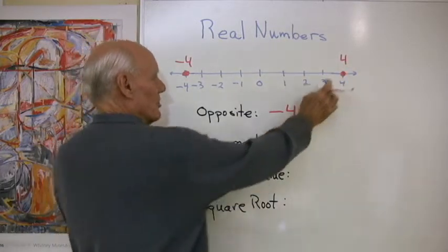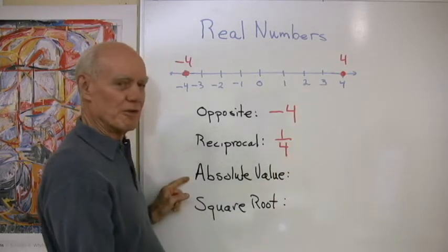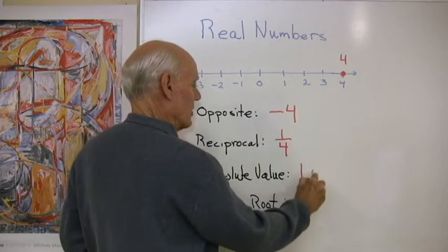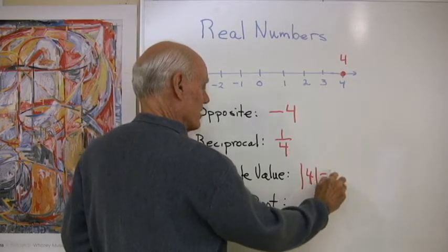Reciprocal, so the reciprocal of four is one-fourth. The absolute value of four is just its distance from zero on the number line, and we use this notation. Absolute value of four is equal to four.